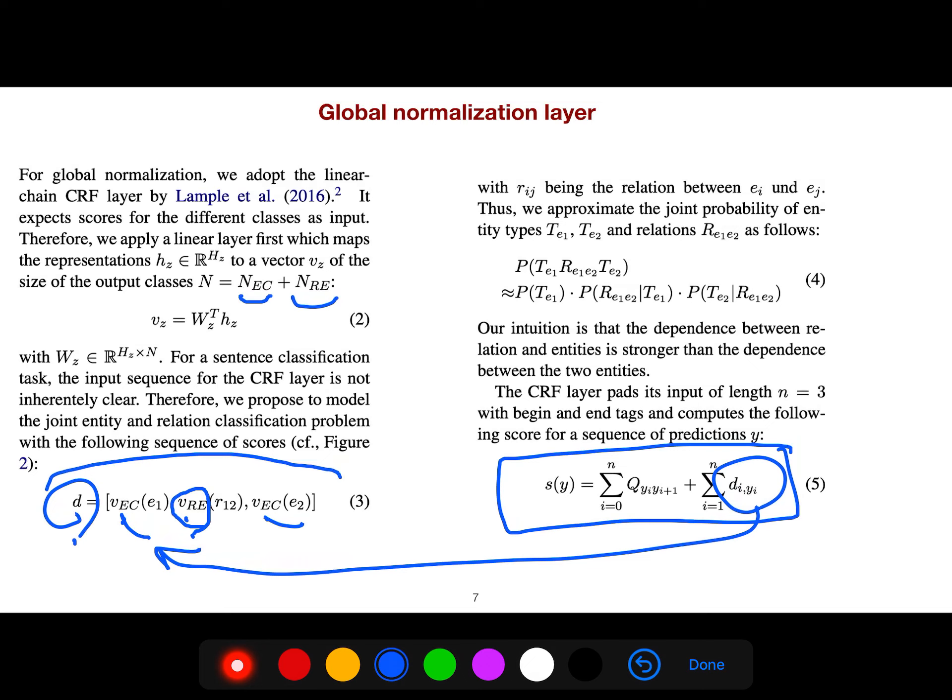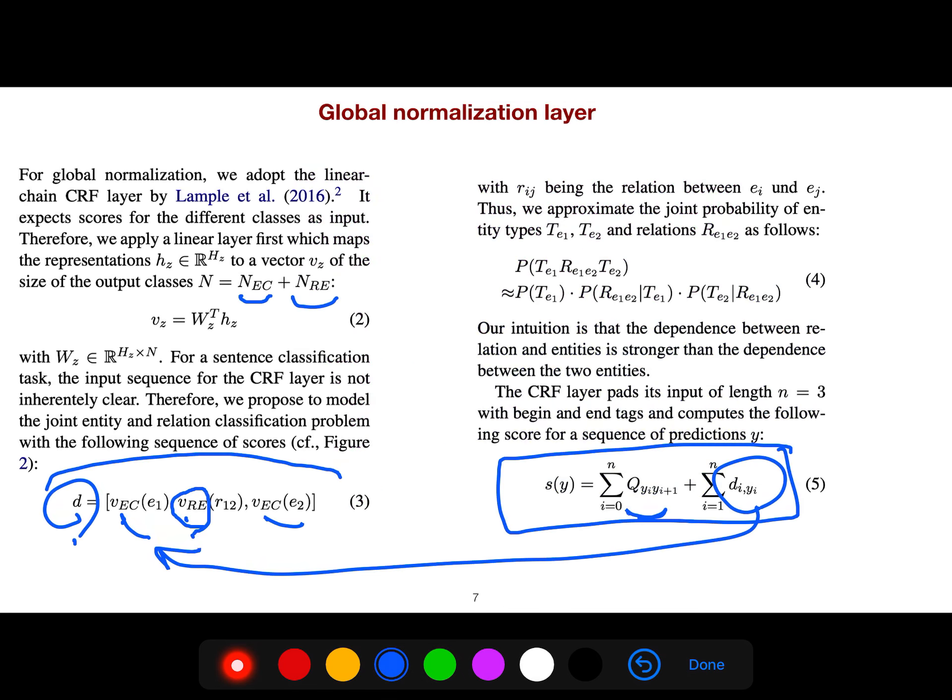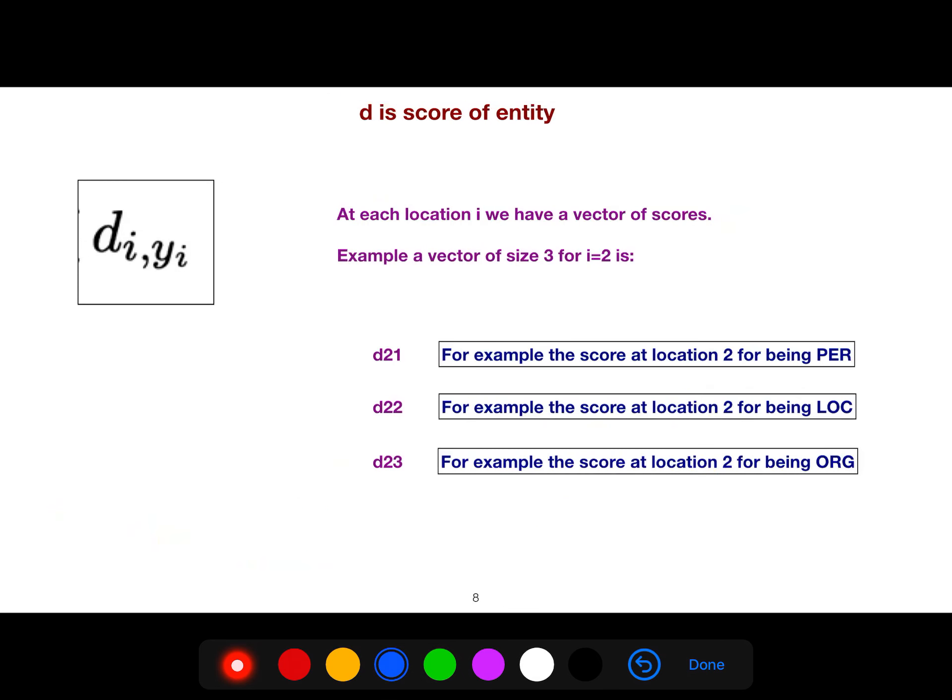D, as I said, is a score of entity. For example, d_21 means the score at location 2 being person, or d_22 means the score at location 2 being location.